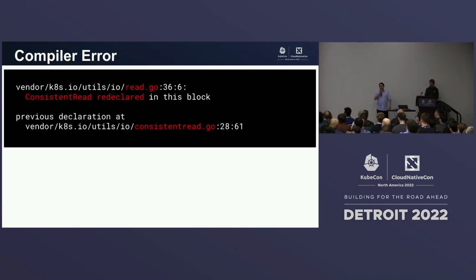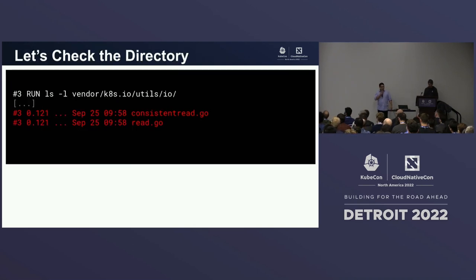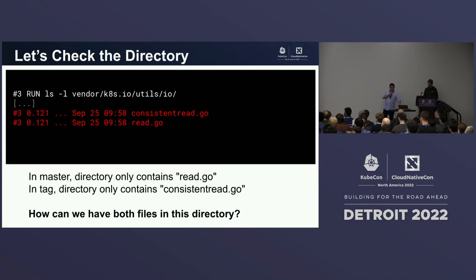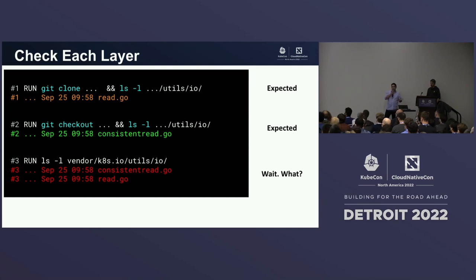Well, we get a compilation error: 'consistent_read redeclared' — clearly declared in two files, read.go and consistent_read.go. The strange thing is when you build this yourself on your laptop or in a regular Docker build, it works perfectly fine. Looking at the directory contents, indeed in the vendor directory we have both files: consistent_read and read. The compilation error is normal at this point — but how did we get into this state? In the master branch you just have read.go, and at the tag you have just consistent_read.go. We clearly shouldn't have both files at the same time.